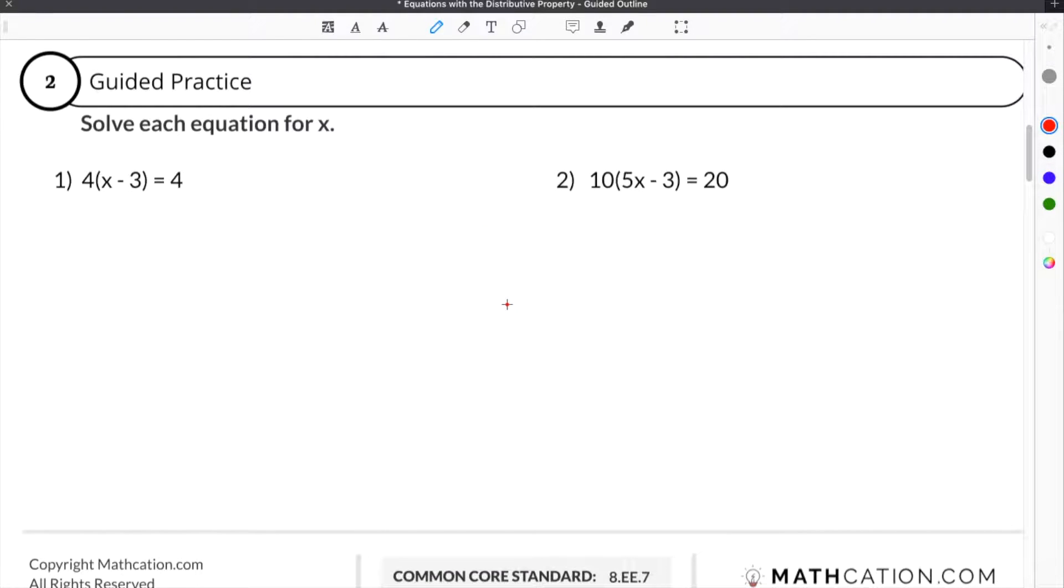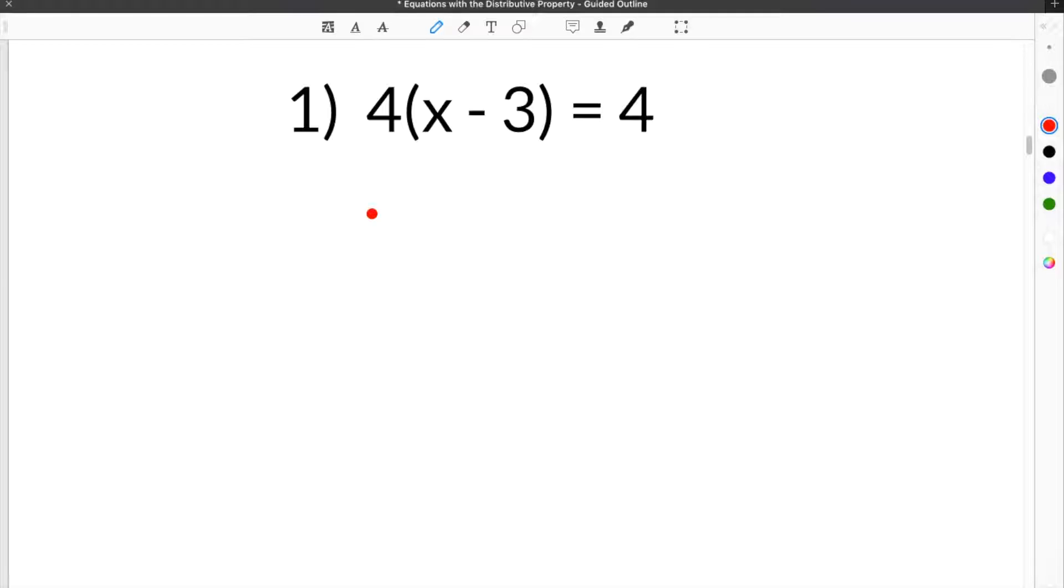Let's jump down to the guided practice part of our worksheet. So now we're looking at number one, which gives us the equation 4 times the quantity x minus 3 equals 4. When you're given an equation like this, with a quantity inside of parentheses and a constant in front of the parentheses, that means you need to distribute this constant to everything inside of the parentheses.